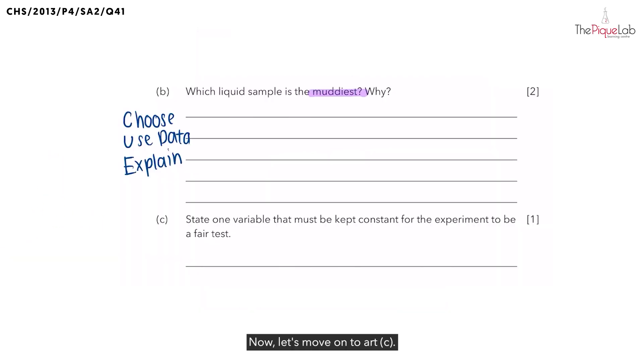Now, let's move on to part C. For part C, we need to state one variable that should be kept the same or kept constant for the experiment to be a fair test.